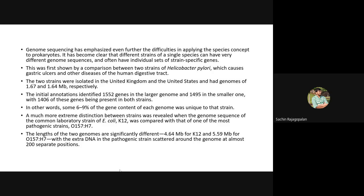For example, two strains of Helicobacter pylori — which causes gastric ulcers and diseases of the human digestive tract — from United Kingdom and United States were compared. Their genomes were 1.67 and 1.64 Mb respectively. Initial annotations identified 1,552 genes in the larger genome and 1,495 in the smaller one, with 1,406 genes present in both strains. This means 6 to 9% of the gene content was unique to each strain, while the rest were similar genes.